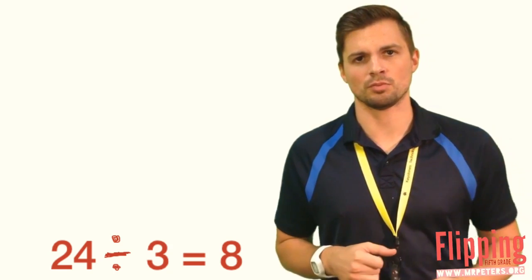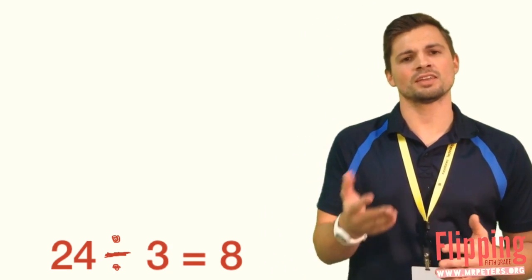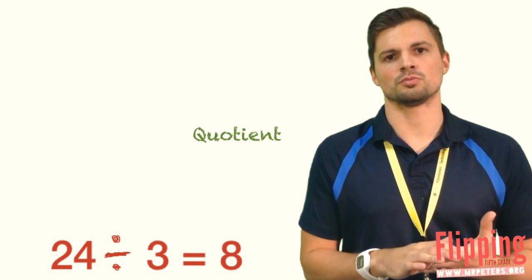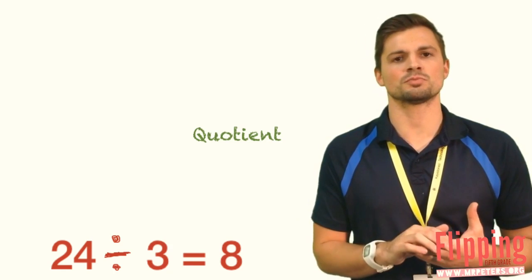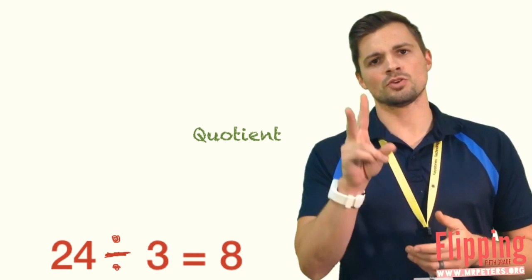I'll explain that in a moment, but first we need to introduce three vocabulary words. The answer to a division problem is called the quotient, just like the product is the answer to a multiplication problem, the sum to an addition problem, and the difference to a subtraction problem. The quotient is your answer to a division problem.